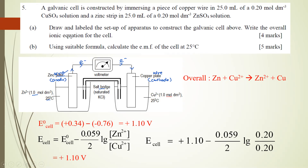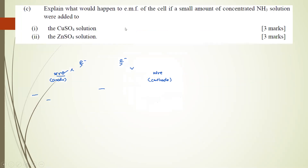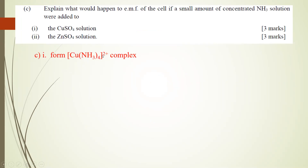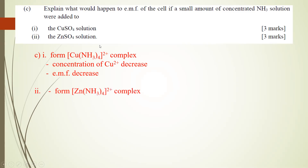Question 5c: explain what happens to the EMF if a small amount of concentrated ammonia is added to (1) copper sulfate and (2) zinc sulfate. When ammonia is added to copper sulfate, a complex [Cu(NH₃)₄]²⁺ forms, so [Cu2+] decreases and the EMF decreases. When ammonia is added to zinc sulfate, a complex [Zn(NH₃)₄]²⁺ forms, so [Zn2+] decreases and the EMF increases as equilibrium shifts to the right.